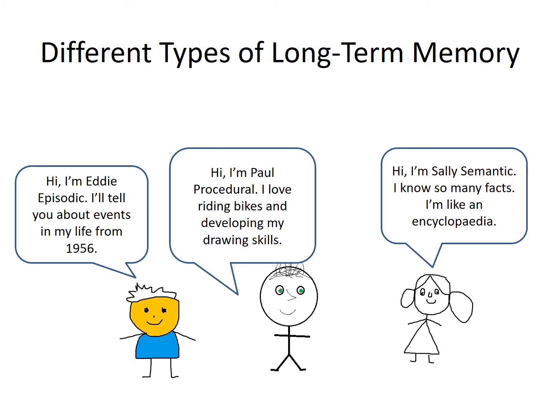There are different types of long-term memory: episodic memory, procedural memory, and semantic memory.